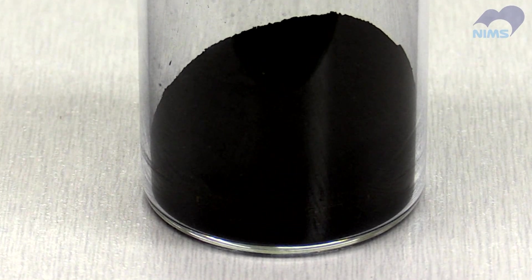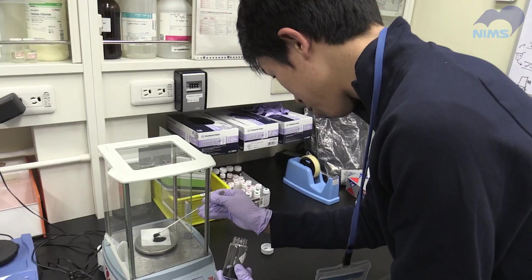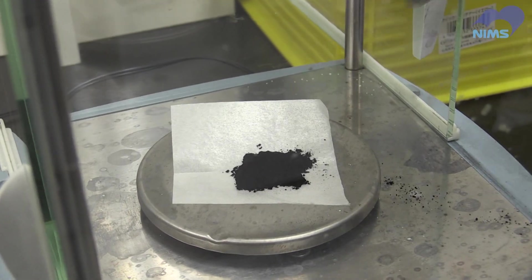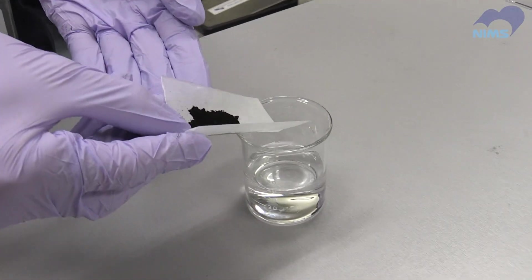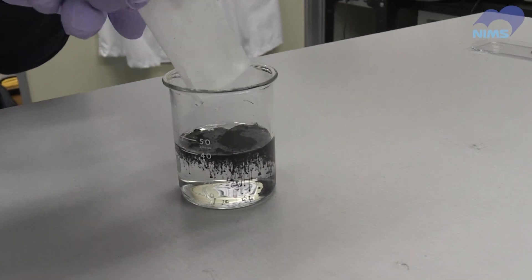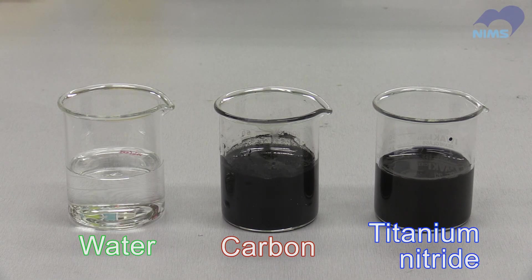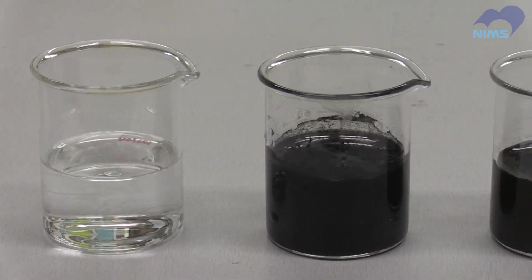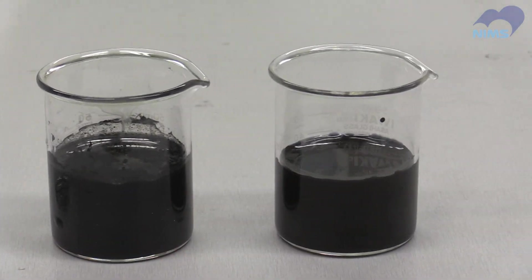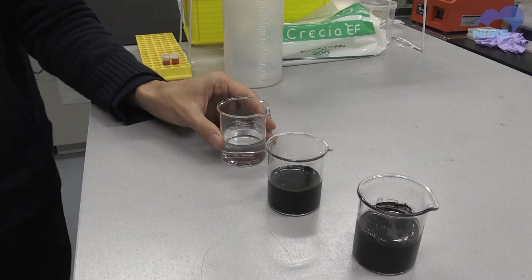Let's observe how titanium nitride particles interact with water. First, we add these nanoparticles to the water. For the sake of comparison, we've prepared two more samples: one with only water and one with carbon particles. Now let's irradiate them with artificial sunshine and measure how long it takes for vapor to appear.